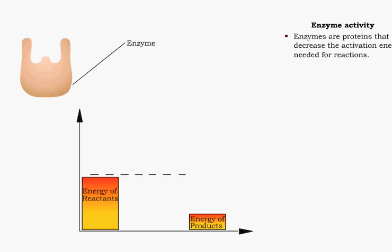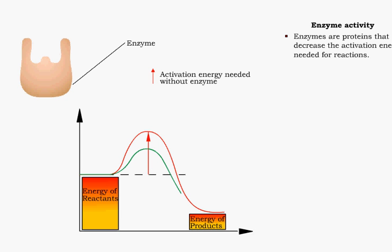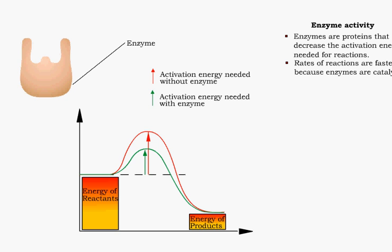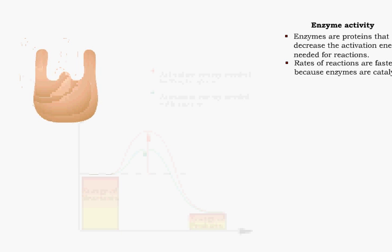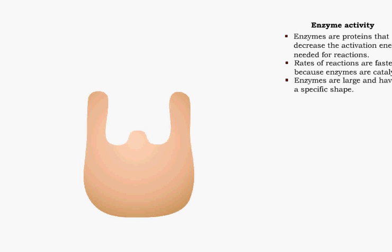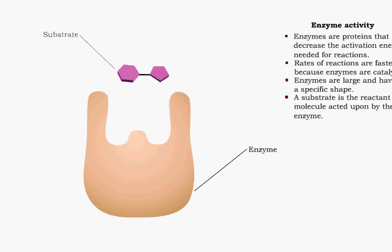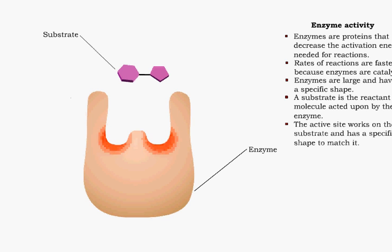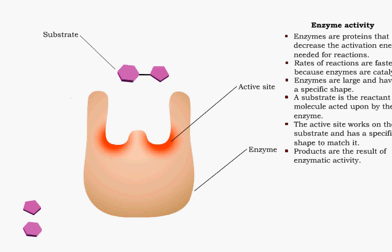Enzymes are proteins that solve reaction rate problems in living systems by reducing the activation energy needed for chemical reactions. Enzymes are catalysts that speed up a chemical reaction. Enzymes are large proteins with specific shapes. The molecule that the enzyme acts upon is called the substrate. The active site is the part of the enzyme that works on the substrate. The active site has a specific shape for its substrate. The products are the results of the enzymatic activity.